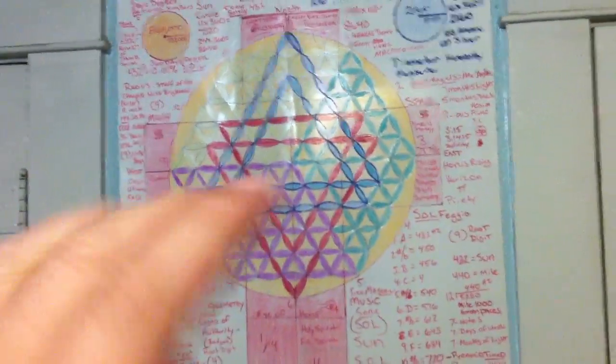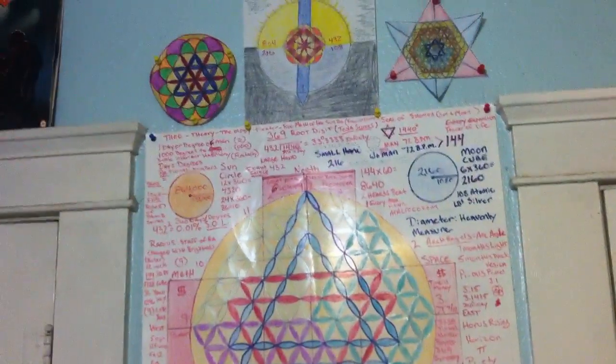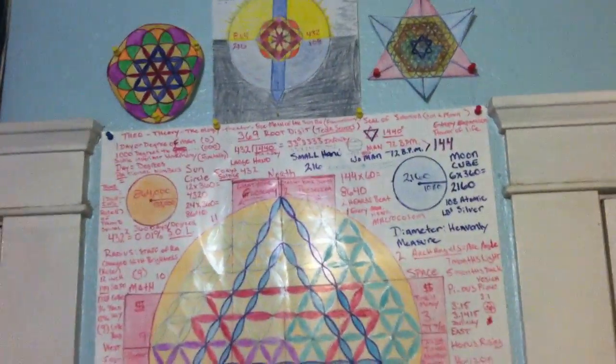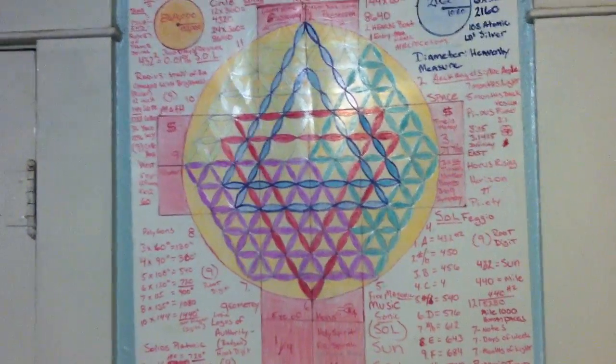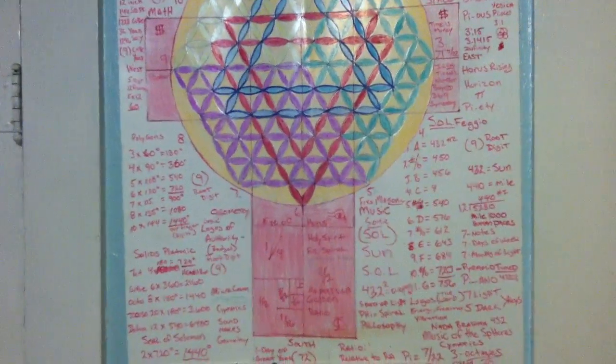This is called the platonic year, it goes back to Plato. Plato would have learned all this from Pythagoras. Pythagoras would have got this from ancient Egypt, and then the ancient Egyptians got this perhaps from whatever earlier civilizations, the Sumerians and all the cultures that they traded with.